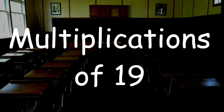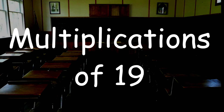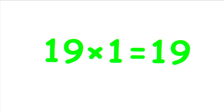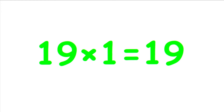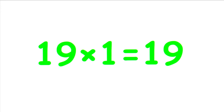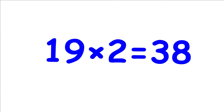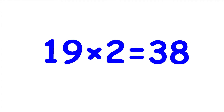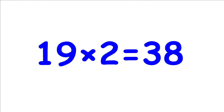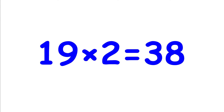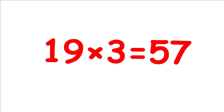These are the multiplications of 19. 19 multiplied by 1 equals 19. 19 multiplied by 2 equals 38. 19 multiplied by 3 equals 57.